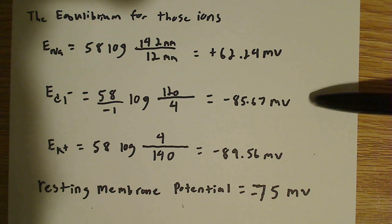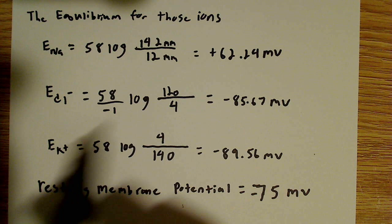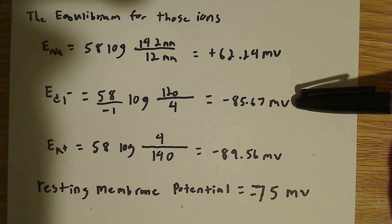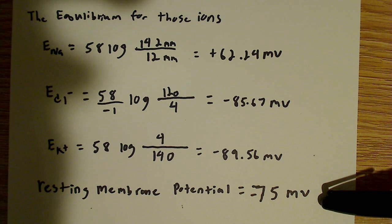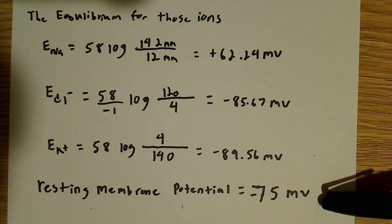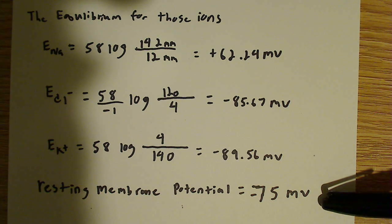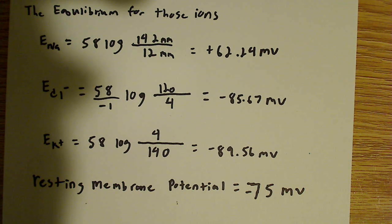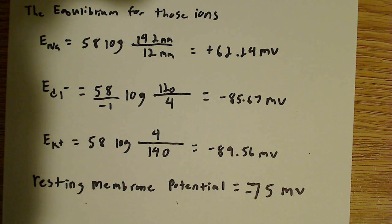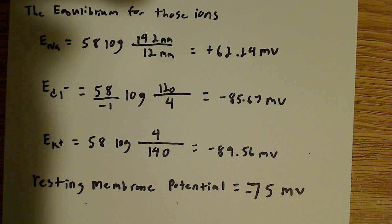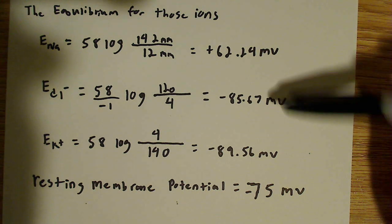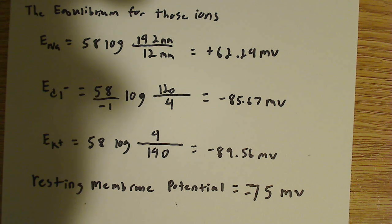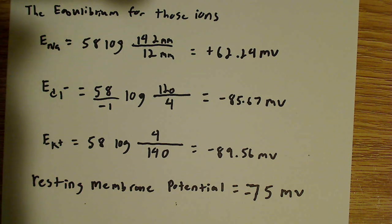For chloride ions, I do the same process but use a negative one to get the signs correct, and I get negative 85.67 millivolts. Comparing that to the resting membrane potential of negative 75, the chloride ions must be moving into the cell because I need to make the cell more negative — closer to negative 85.67. Moving negatively charged chloride ions into the cell accomplishes that.